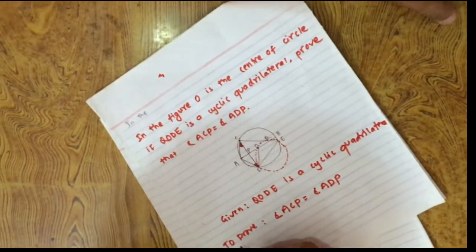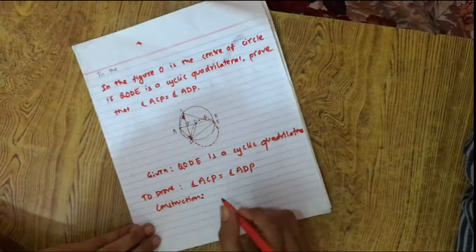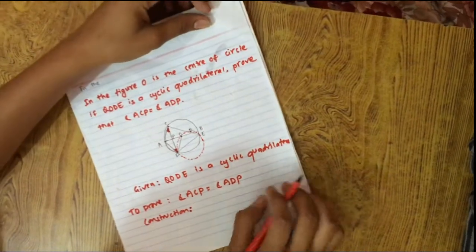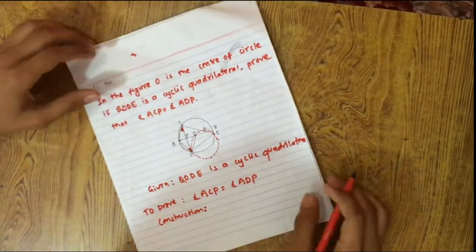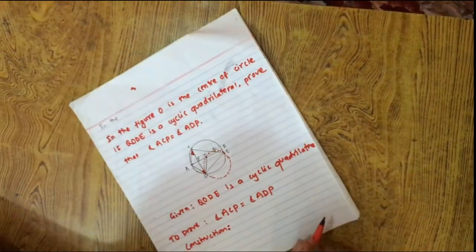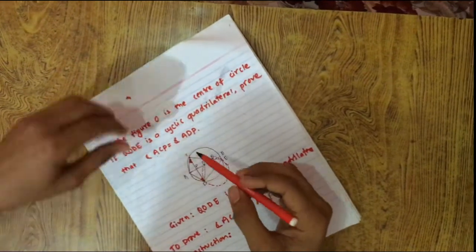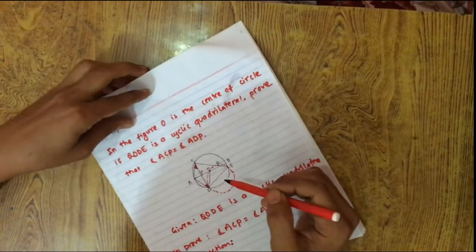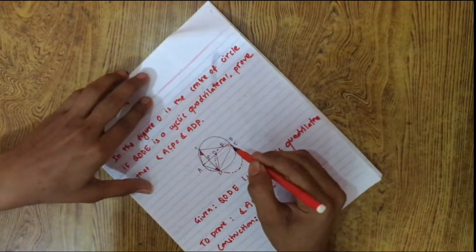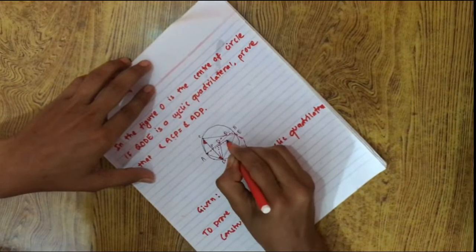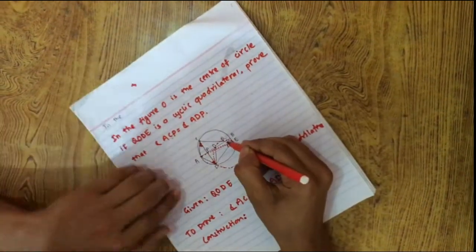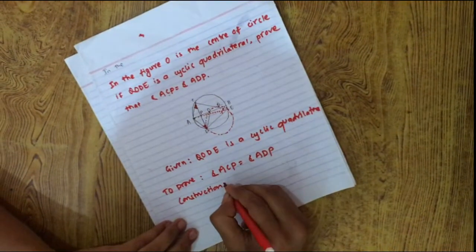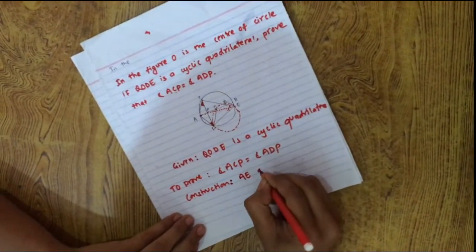Following the procedure, construction. To make our equation simple, we have to do various constructions. We have to prove that angle ACP is equal to angle ADP — these angles are standing on arc AC and AD. So we are doing the construction: join AE and join AR.